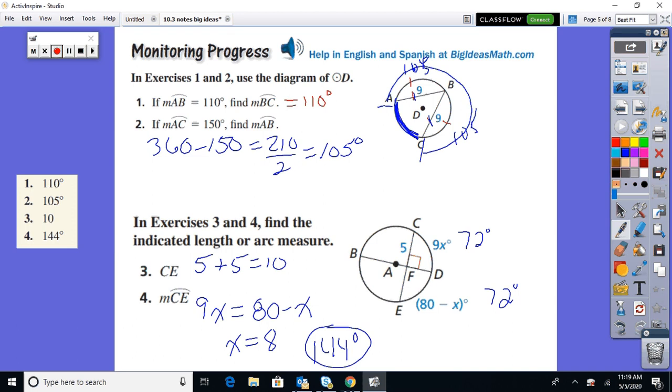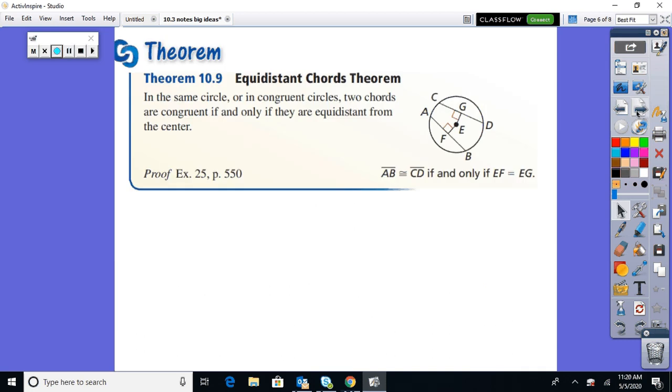Now at the bottom, 3 and 4. So CE, let's see. Find the indicated length. So C to E, the chord. Well, there's 5 there. There's 5 there. 5 and 5 is 10. And then the measure of the arc from C to E going around a circle. Well, set them equal to each other. Solve it for X. Plug it back in. 72 and 72, 144.